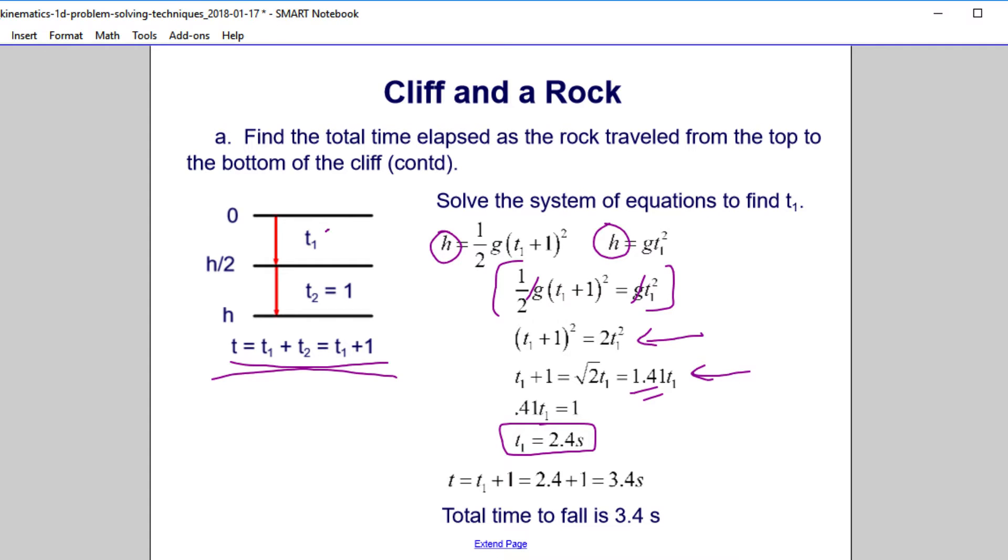So it took 2.4 seconds to fall this first distance, and then one second for the next one. And that should not surprise you, right? The greater distance you fall, the acceleration acts for a longer time, so it'll take you quicker to get the same distance. So to cover the first h over 2, it's 2.4 seconds. You're then moving faster, so it only takes you one second to cover the next half.